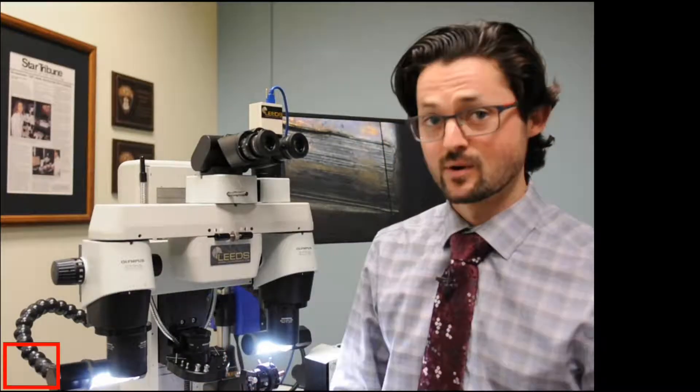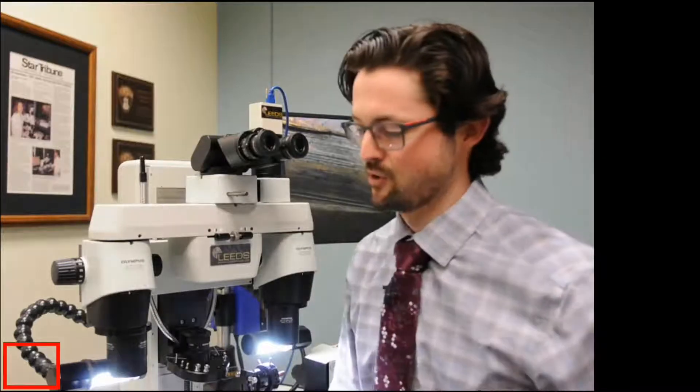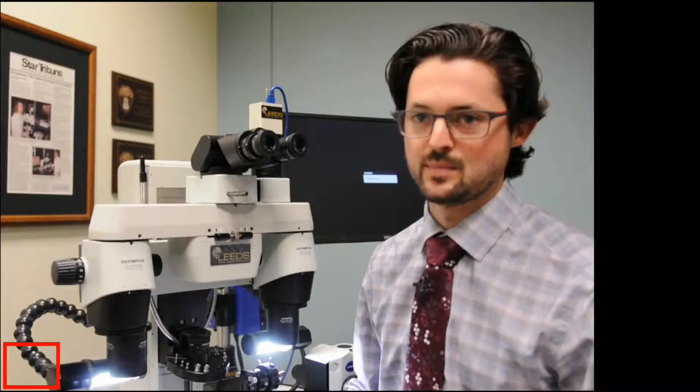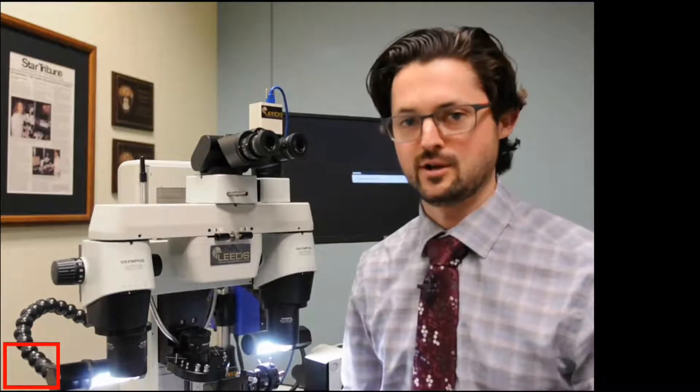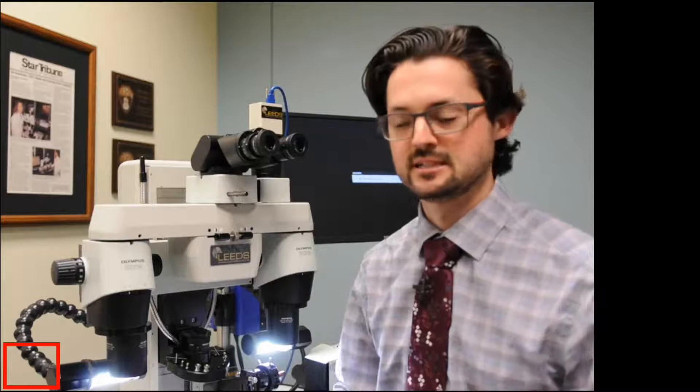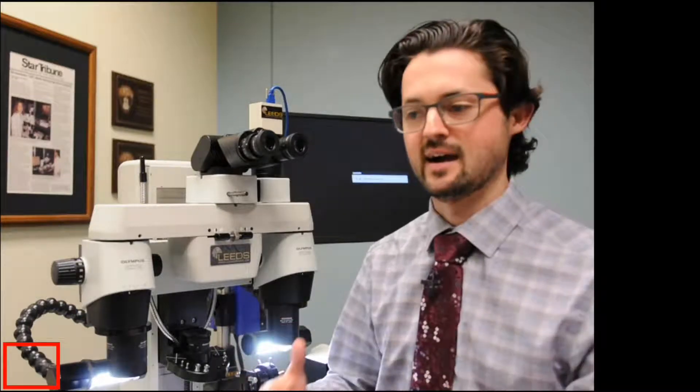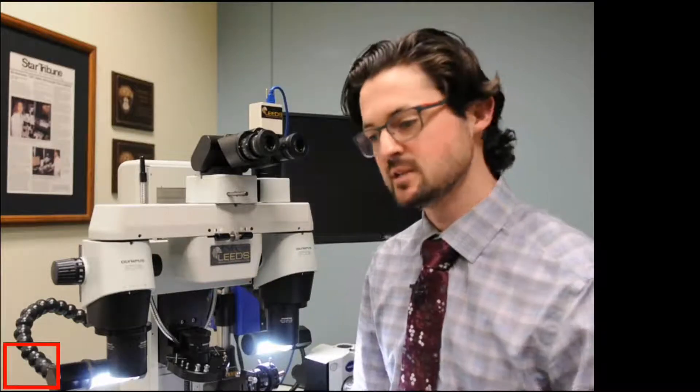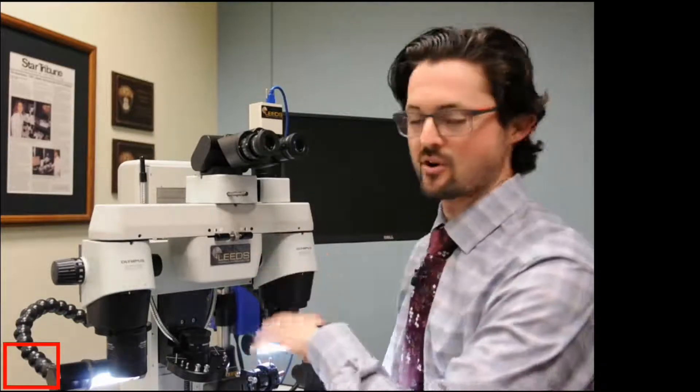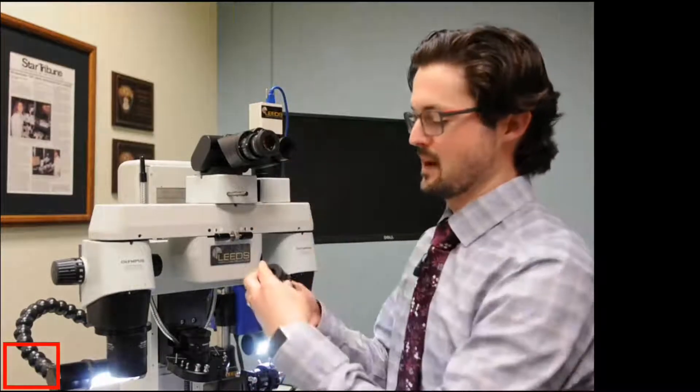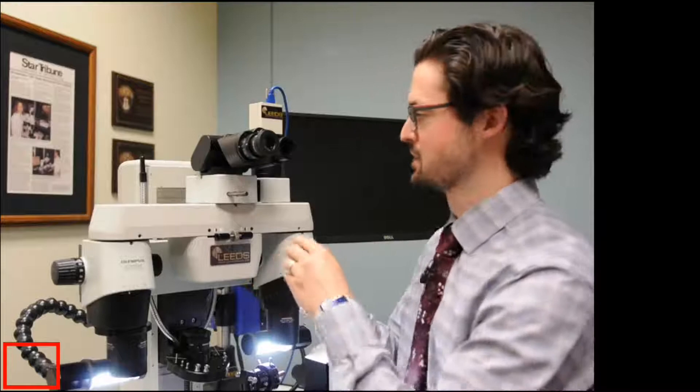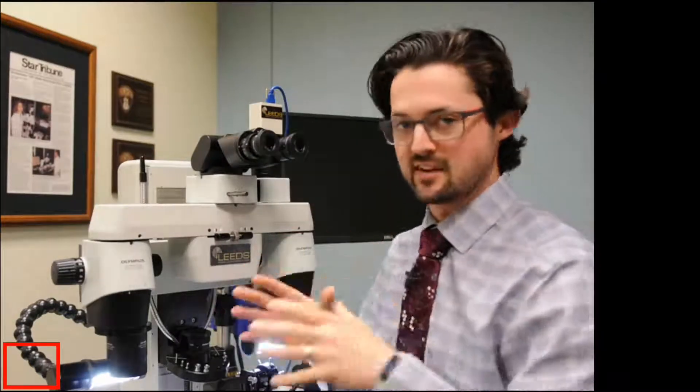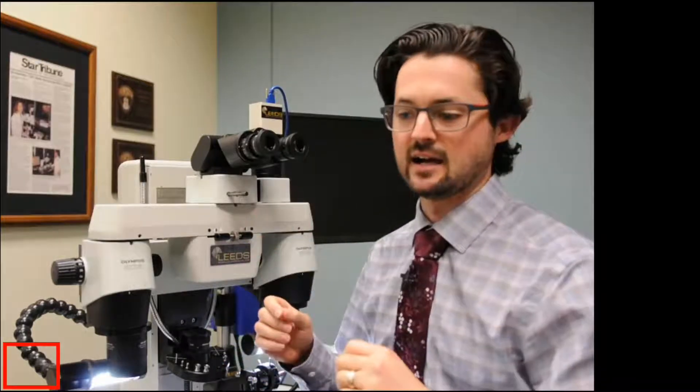So let's get started. As you can see behind me, I have one of our Leeds LCF-3 comparison scopes. And one of the biggest topics that comes up when we're training or when we're working with firearm examiners is how to get the eyepieces corrected for an individual examiner. What's really neat is we have on our microscope these printed diopter numbers. But this technique that we're going to do today really allows you to find exactly what your numbers are, and so you can dial them in.